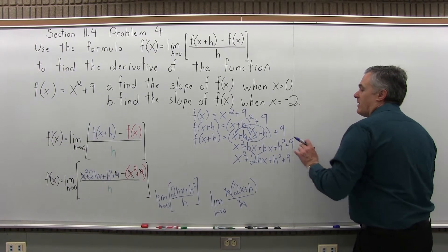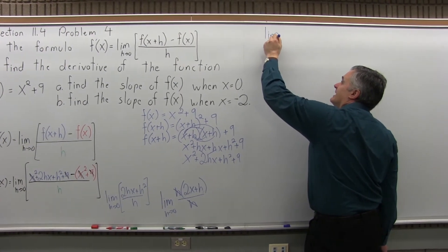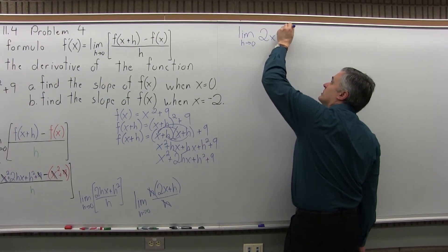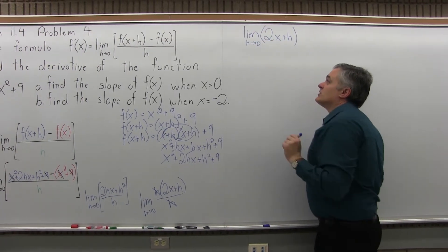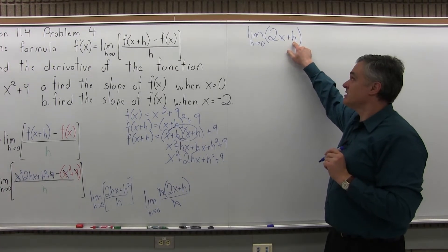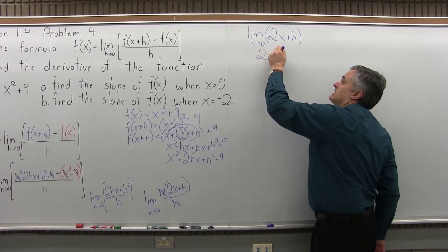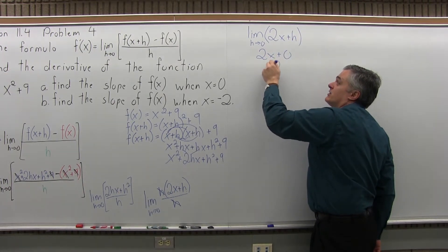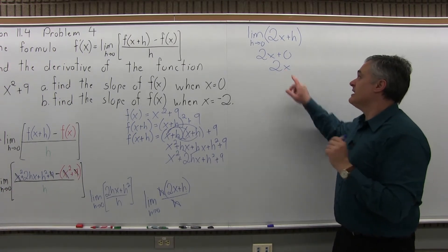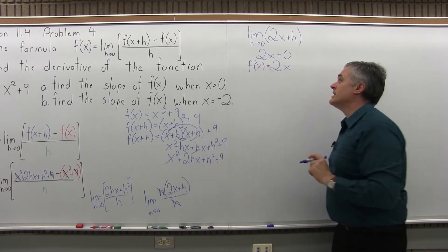So now I have the limit as h approaches zero of 2x + h. Now that there's no more h in the denominator, the h that's left in the numerator, I can just let that run down to zero. The answer for this limit is 2x + 0. That h goes to zero. We're just plain old 2x. So that is f'(x). That is the derivative. This is the formula that will tell me the slope at any point on the graph that I want.